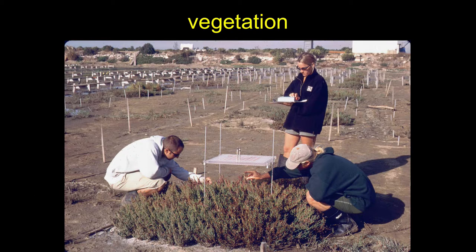Usually the next layer is to work on the vegetation. We've got the water, we've got the underlying physical structure and soils. Now let's work on adding the stationary life forms — the life forms that don't move around, at least initially. Their seeds might move around and colonize elsewhere, but the actual plants don't typically move.